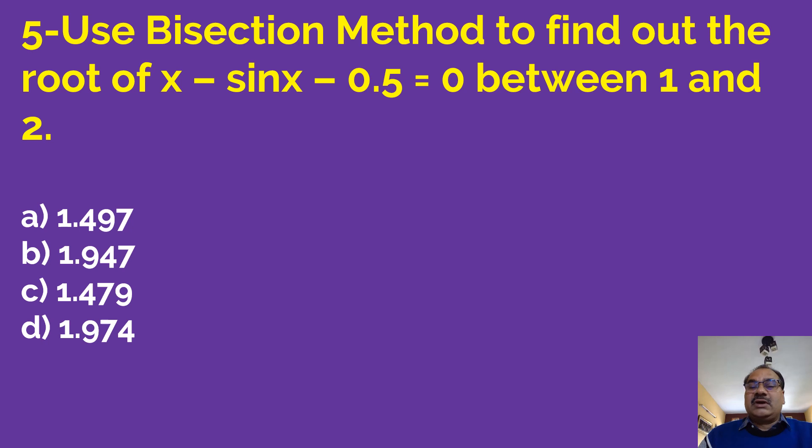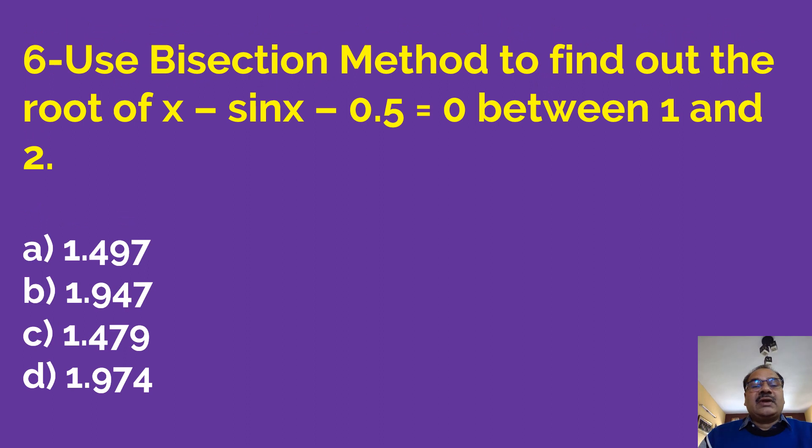Fifth is: use bisection method to find out the root of x minus sin x minus 0.5 equals 0 between 1 and 2. The alternates are 1.497, 1.947, 1.479 and 1.974. The next question is: use bisection method to find out the root of x minus sin x minus 0.5 equals 0 between 1 and 2. The alternates are 1.497, 1.947, 1.479 and 1.974.